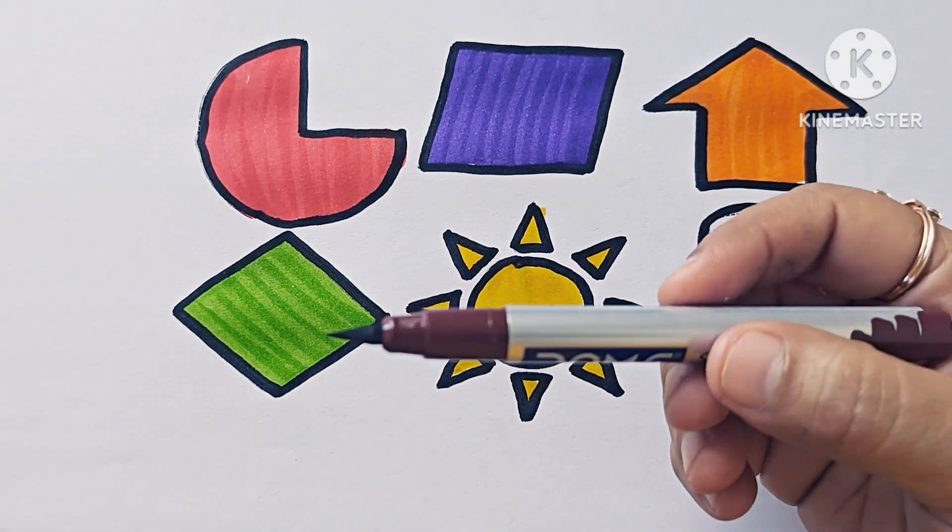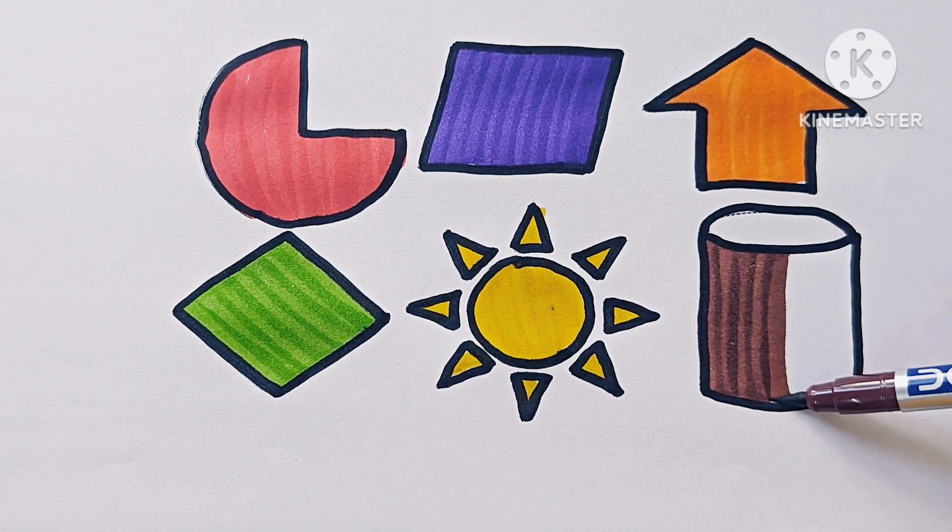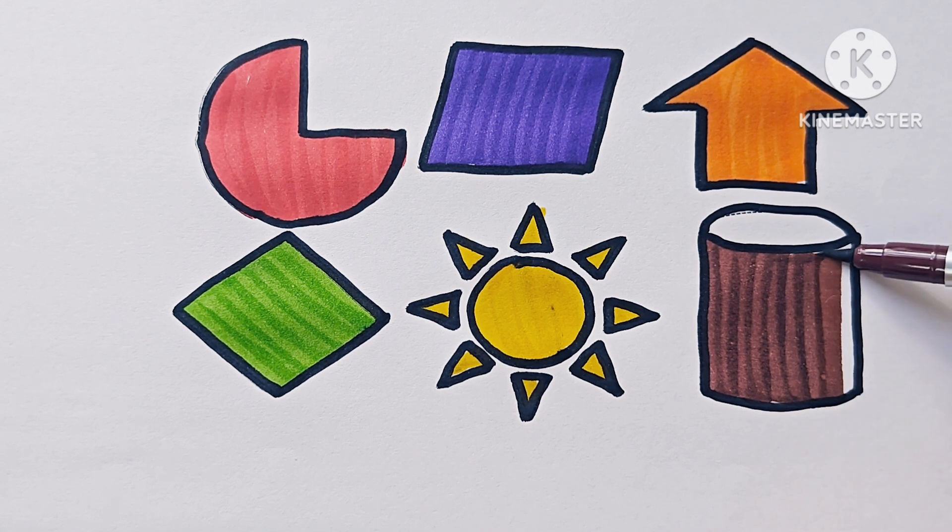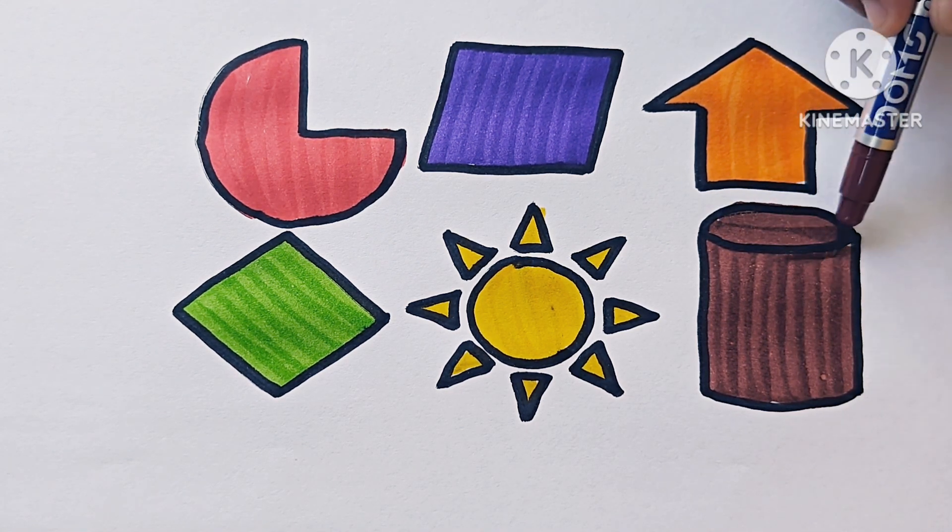This is brown color and this shape is cylinder. It is a three-dimensional shape. This is cylinder, a three-dimensional shape.